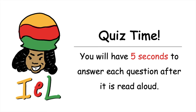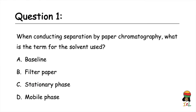It's quiz time and you have five seconds to answer each question after it is read aloud. Question one: when conducting separation by paper chromatography, what is the term for the solvent used? A: baseline. B: filter paper. C: stationary phase. D: mobile phase. The answer is the mobile phase.